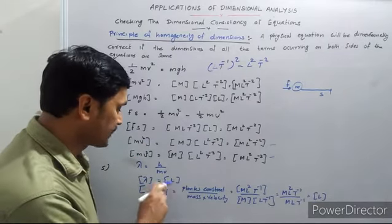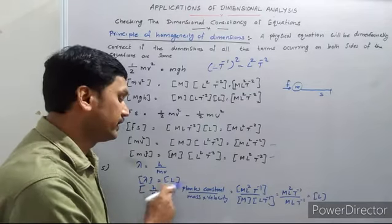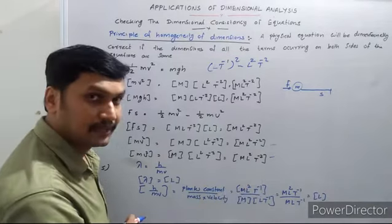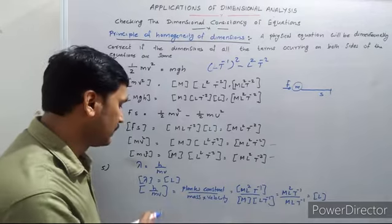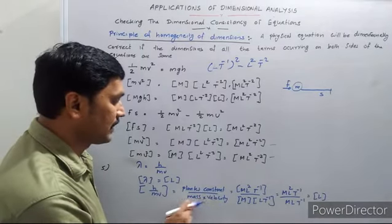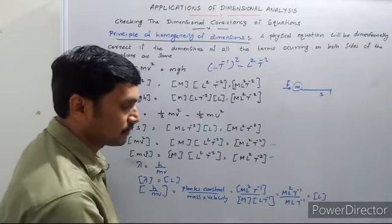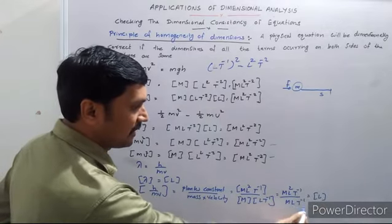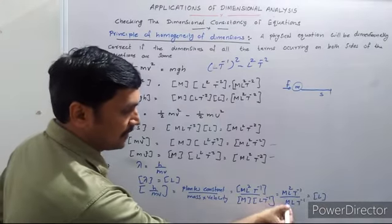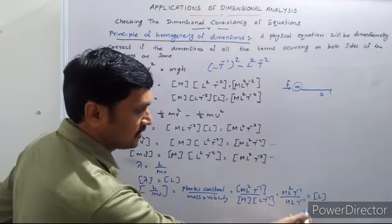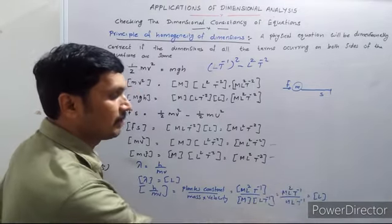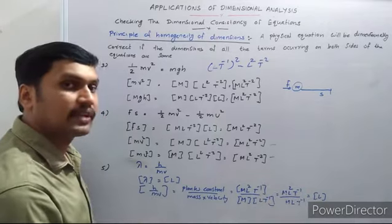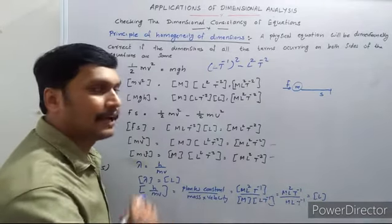The dimension of h, Planck's constant, is M·L²·T⁻¹, and the dimension of mv (mass into velocity) is M·L·T⁻¹. So h divided by mv gives M·L²·T⁻¹ divided by M·L·T⁻¹. M and M cancel, T⁻¹ and T⁻¹ cancel, and L² divided by L gives L. So the right-hand side also has dimension L, same as the left-hand side. This equation is also dimensionally correct.